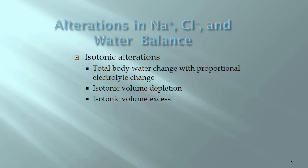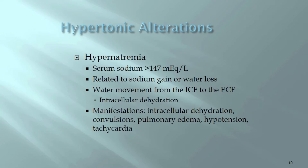Alterations in sodium, chloride, and water volume balance can be isotonic — the body loses water with a proportional electrolyte change. Both isotonic volume depletion and excess involve sodium, chloride, and water moving together, so the tonicity of the fluid stays the same because proportional amounts of water and sodium-chloride are lost.